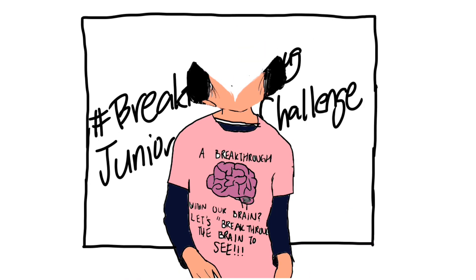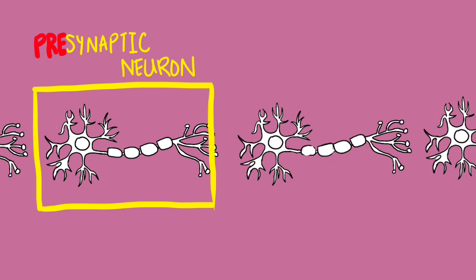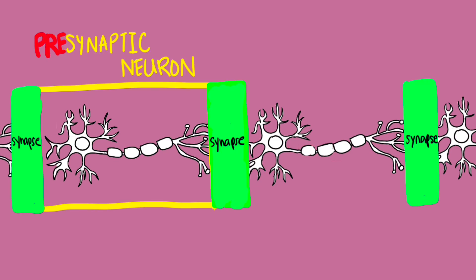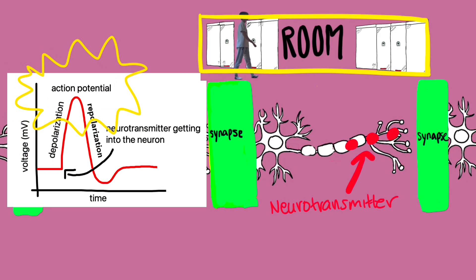Our brain consists of over 80 billion neurons, and these neurons produce and send neurotransmitters. A presynaptic neuron sends neurotransmitters to a synapse, which binds onto the postsynaptic neuron to result in an action potential.